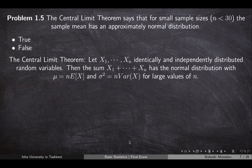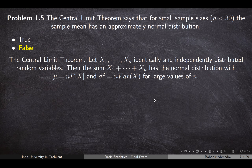Problem number five is about the central limit theorem. The central limit theorem tells us that if you are given identically and independently distributed random variables, then their sum has a normal distribution for large enough n, with mean equal to n multiplied by the mean of each random variable, and variance equal to n multiplied by the variance of each random variable. The statement that the sum has a normal distribution for small n is false, because the CLT requires large enough n.